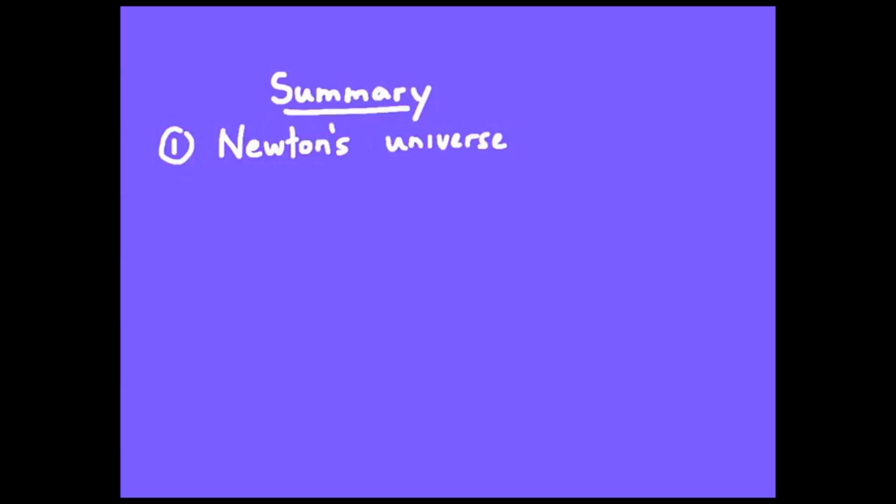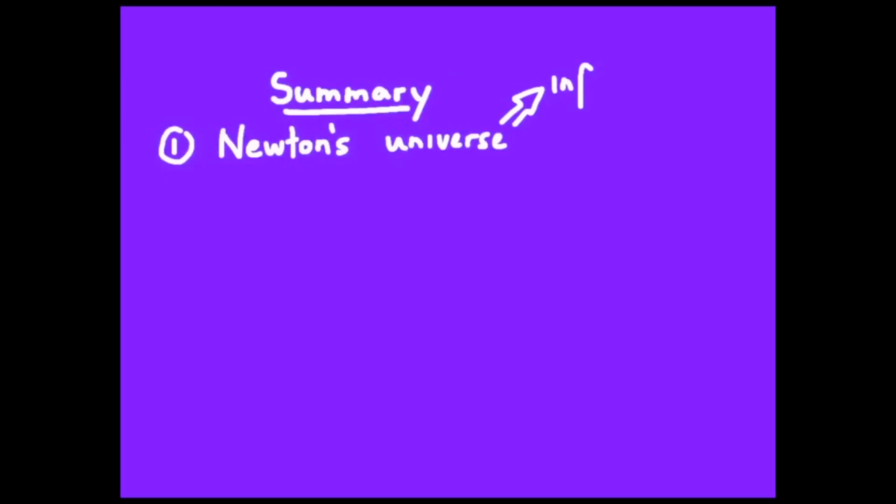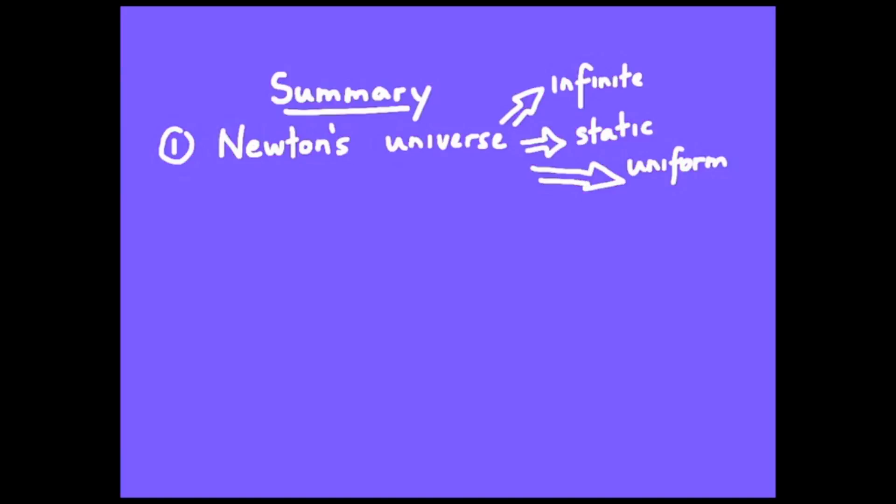Let's go through a summary. Number one, Newton's model of the universe. Three pieces here. One that is infinite, had to be, otherwise it would collapse under its own gravitational force. That it's static, and that it's uniform. So a constant number of stars per unit volume.